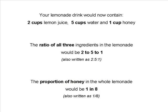Your lemonade drink would contain two cups of fresh lemon juice, five cups of water, and one cup of honey. The ratio of all three ingredients in the lemonade would be two to five to one. But the proportion of honey in the whole lemonade would be one out of eight, or one in eight.